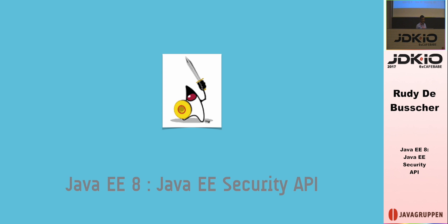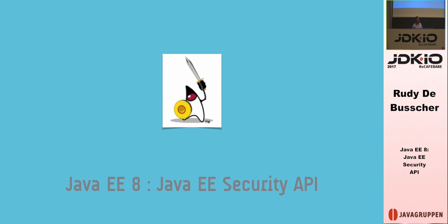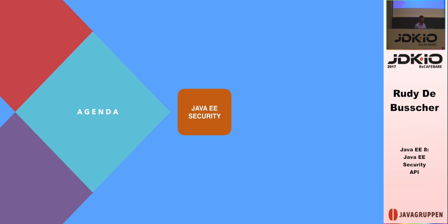Thank you for joining me in this session about Java EE Security API. It's the new specification which will be added to the upcoming release, the 8th release, which will be due in a month or so. So time is almost up for us to come up with good code.